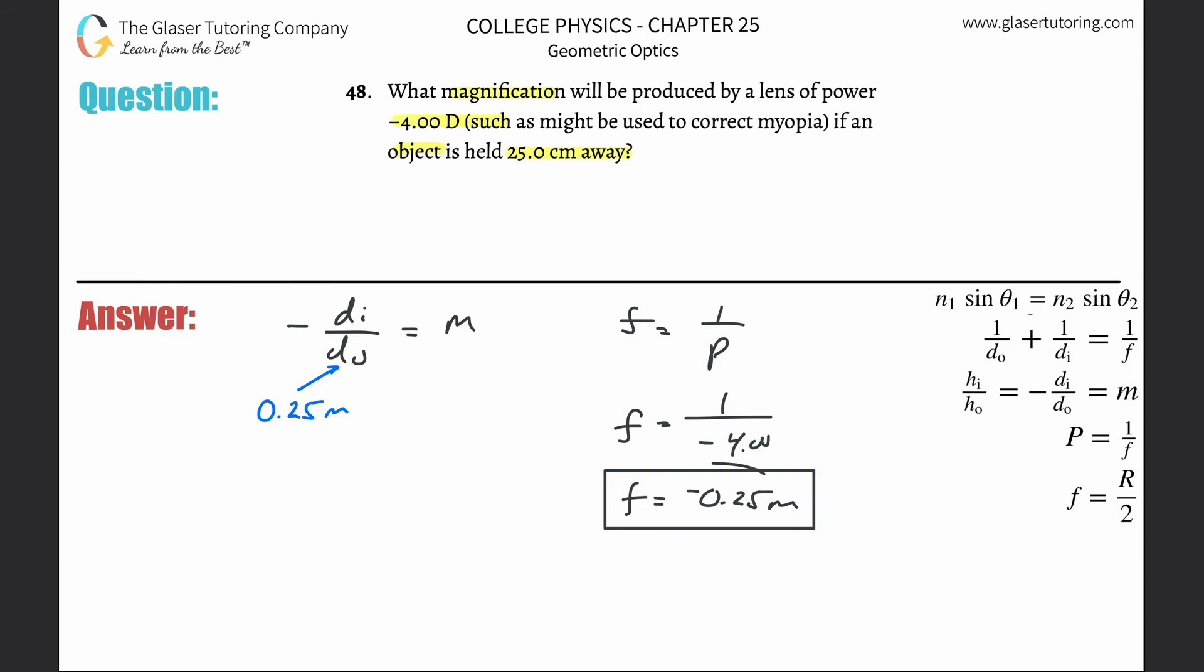Now how do we take focal length and object distance and find the image distance? That's where we need the thin lens equation. Notice I start with the overall equation, see what I got, then I realize I need image distance, so I can't go anywhere there. Then I start saying what other information is in the problem, what else can I calculate from that, and I'm able to piece it together.